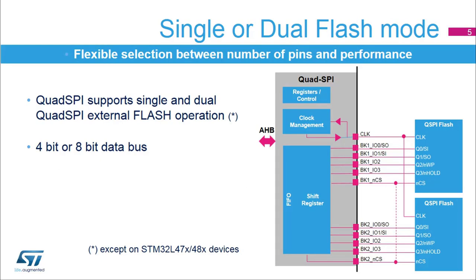The Quad SPI memory interface supports the connection of one or two external memories, meaning that data can be transferred over a four or eight bit data bus between the memory and the microcontroller. It gives the user flexibility to choose between the number of pins required for connection — six for a single and ten for a double connection — and the performance of the data transfer: four bits for a single or eight bits for a double connection.